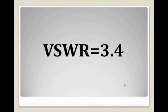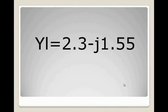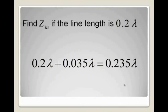So, we get VSWR equal 3.4. Moving to Y-load, we can see the magnitude and the imaginary part of it. So, we get Y-load equal 2.3 minus J 1.55.